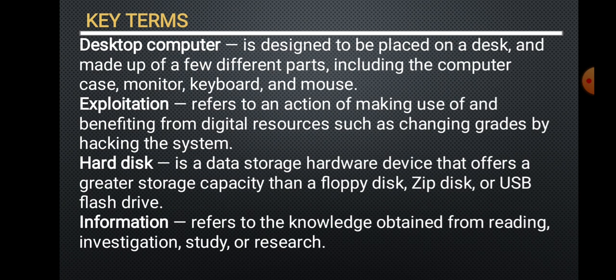A desktop computer is designed to be placed on a desk and is made up of a few different parts including the computer case, monitor, keyboard, and mouse. Exploitation refers to an activity of making use of and benefiting from digital resources such as changing grids by hacking a system. A hard disk is a data storage hardware device that offers greater storage capacity than a floppy disk, zip disk, or USB flash drive. Information refers to the knowledge obtained from reading, investigation, study, or research.